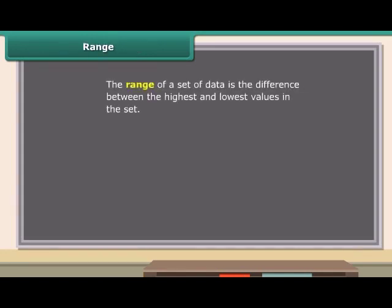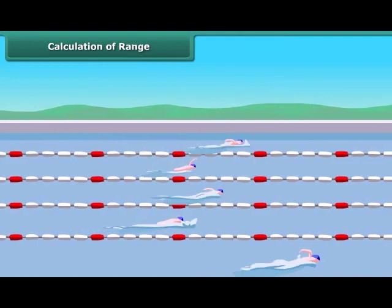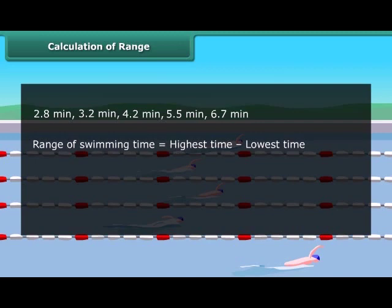The range of a set of data is the difference between the highest and lowest values in the set. To find the range, first order the data from least to greatest, then subtract the smallest value from the largest value in the set. Now you can also find the range of any set of data. Five participants completed their swimming race. Can we calculate the range of swimming time from this data? Yes, it's simple. First, order the data from least to greatest, then subtract the least value of time from the highest. So the range of swimming time is 3.9 minutes.